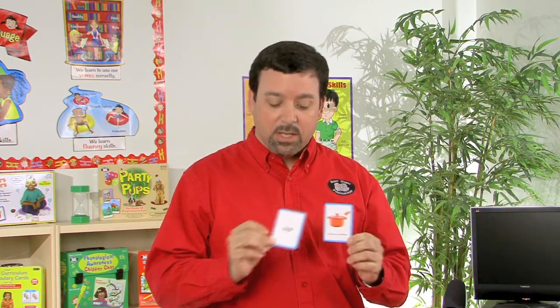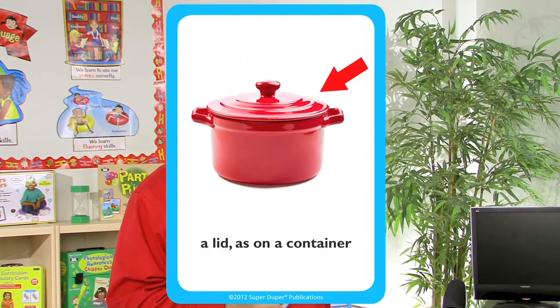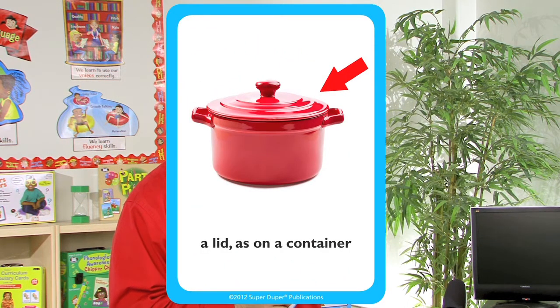Each of the card decks will have a word card, and then we're going to have three levels of difficulty of photo definition cards. Level one of the definition is going to be the definition that's probably most familiar to the student. So if we have the word top, this will be the level one card that says a lid as on a container.